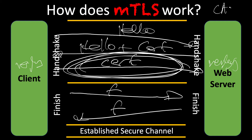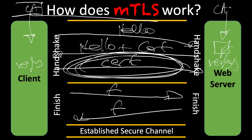In a normal TLS connection, a public trusted CA will issue the certificate for the web server, and then we verify that certificate. But in MTLS, what will actually happen is the organization rolling out MTLS will have their own server — they're going to become their own certificate authority. By becoming their own root certificate authority, they're going to issue a certificate on the client side and also issue a certificate on the server side. That's the key differentiator here: your organization itself is the root certificate authority, and they're the ones actually issuing those certificates.